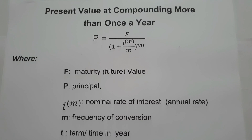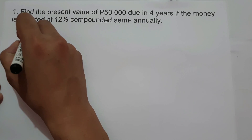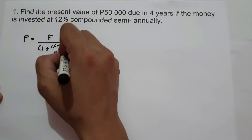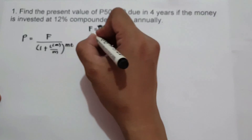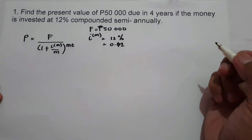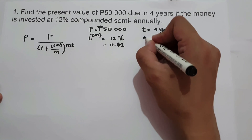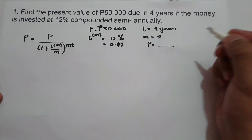Let's start with an example. On the first example, find the present value of 50,000 due in 4 years if the money is invested at 12% compounded semi-annually. To find the present value, we identify the given: F equals 50,000, nominal rate I raised to M equals 12% or 0.12, time T equals 4 years, and frequency of conversion M equals 2 since we have semi-annually. We are looking for the present value or the principal, and we will also find the interest.